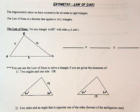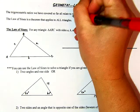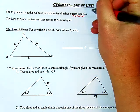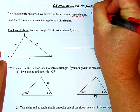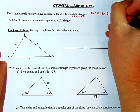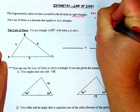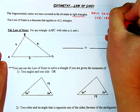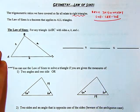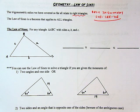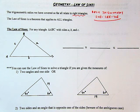Today we are taking on the law of sines. The trigonometric ratios we've covered so far relate to right triangles — what we think of as basic trigonometry, or SOH-CAH-TOA. The beauty of the law of sines is that it's a theorem that applies to all triangles, and we derive these relationships from our knowledge of right triangles using basic trigonometry.